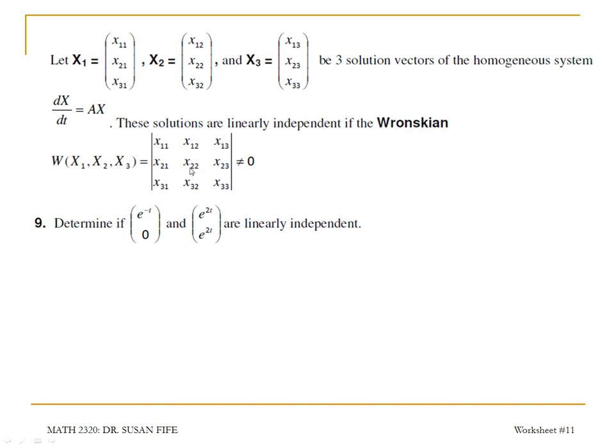We can take the Wronskian by listing the elements of each matrix in columns. So this is my x1, this is my x2, and this is my x3.